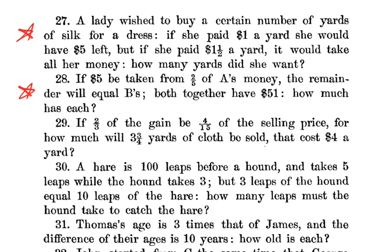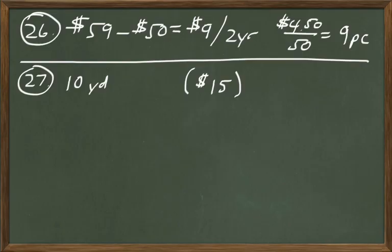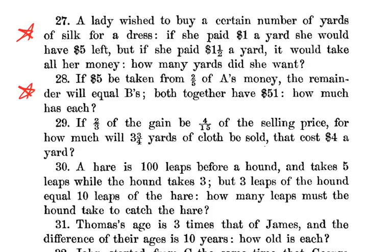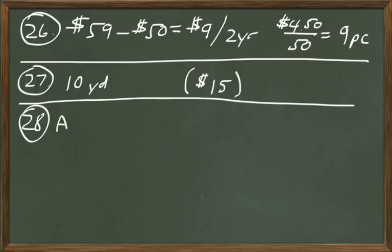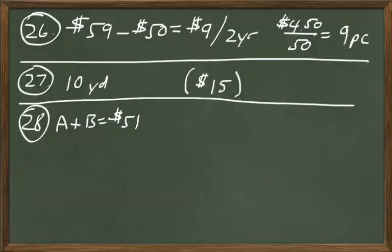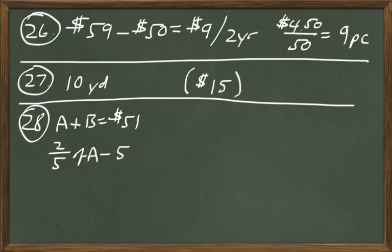In problem 28, five dollars taken from two-fifths of A's money leaves a remainder equal to B's money, and both together have $51. Let's break this down. We know A's money plus B's money equals $51. The other piece of information is that two-fifths of A's money minus $5 equals B's money — that tells us how much B has.